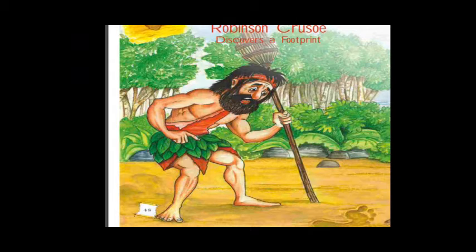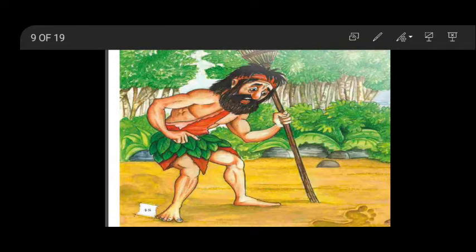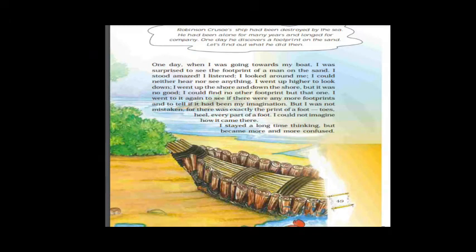Since the poem was short, we will continue with one more lesson. The next lesson is Part B: 'Robinson Crusoe Discovers a Footprint.' Before starting, let me explain — footprint means the impression left by a foot. We will be learning this lesson from page number 49.